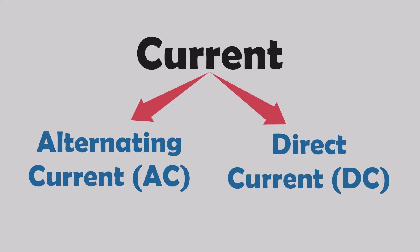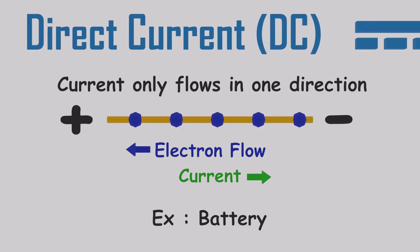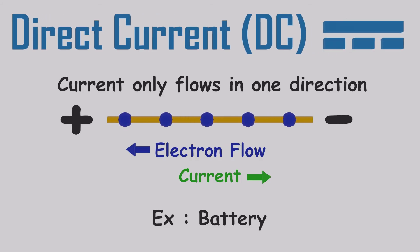There is one last important concept we have to understand. There are two types of current that we use: direct current and alternating current. Direct current is simple. The electrons flow only in one direction. The negative and positive sides of a wire are certain. Batteries is the best example that supplies this kind of direct current. The symbol for direct current is a straight line with a dashed line beneath it like this.